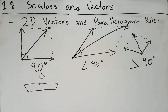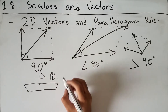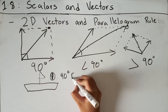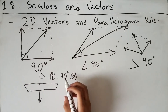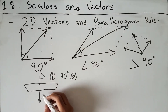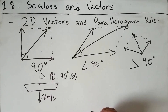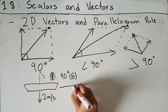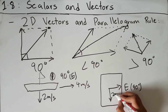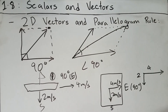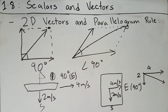Let's say you have a boat heading east at 4 meters per second, but a river current pushes it sideways — south — at 2 meters per second. On a 2D diagram, you have a velocity of 4 meters per second east and 2 meters per second south. Your resultant velocity points southeast.